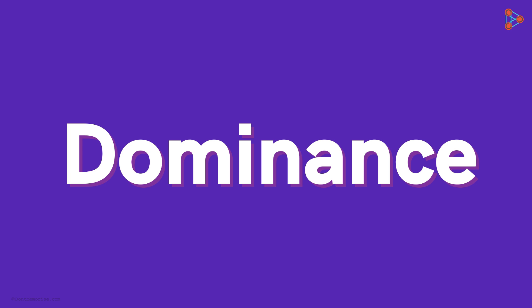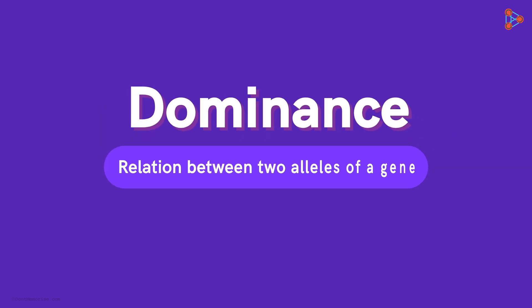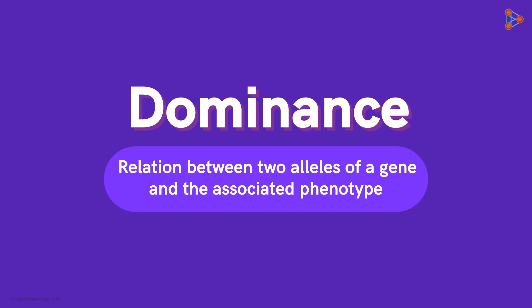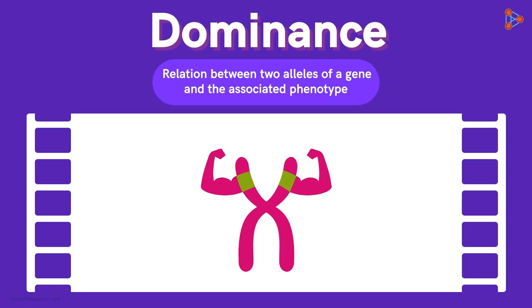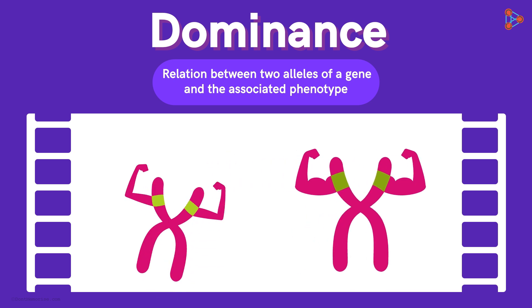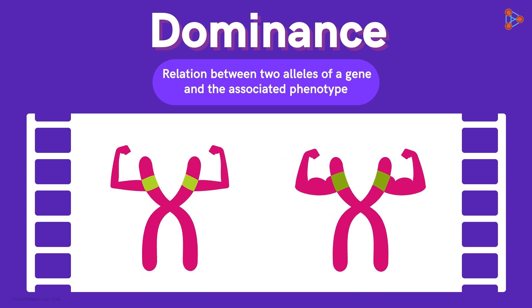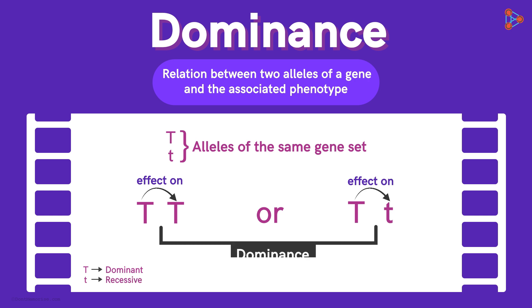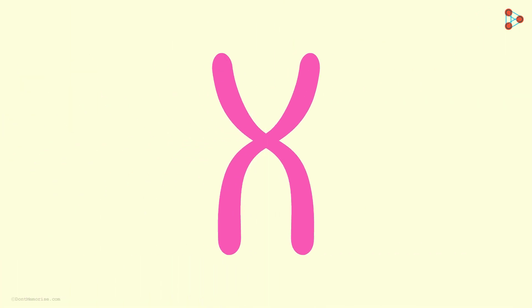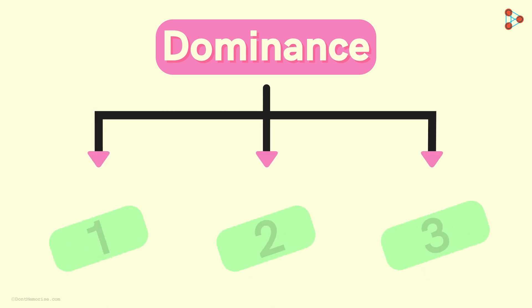Can you tell me what dominance is? Technically, it can be defined as the relation between two alleles of a gene and the associated phenotype. Dominance is all about how one dominant allele of a particular gene interacts with the other recessive or dominant allele of the same gene set in an organism.